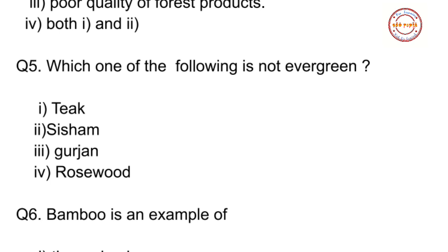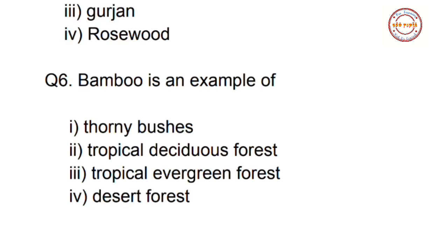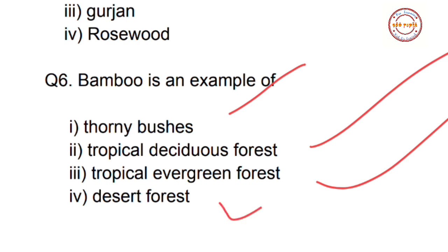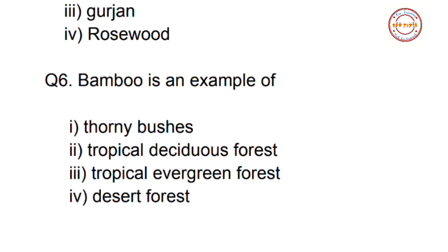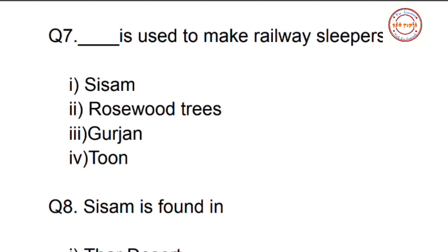Question number five: Which one of the following is not evergreen? First option: teak; second option: sisham; third option: gurjan; fourth option: rosewood. The correct answer is option one — teak is not an evergreen tree. Question number six: Bamboo is an example of — the correct answer is option three, tropical evergreen forest.